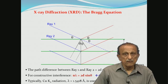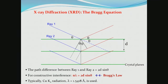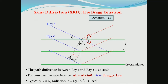I believe all of you are familiar with X-ray diffraction and the Bragg equation. The diagram shows the derivation of Bragg's law: n lambda = 2d sin theta. You have parallel crystal planes separated by distance D. X-rays come in and get scattered from the surface. Ray 1 and ray 2 have a path difference of 2d sin theta. When 2d sin theta equals n lambda — where n is an integer and lambda is the X-ray wavelength — you get constructive interference, producing diffraction peaks at those values of theta.